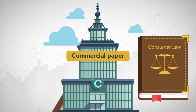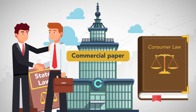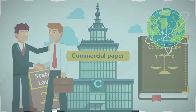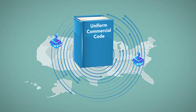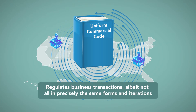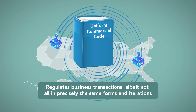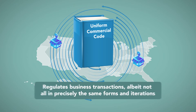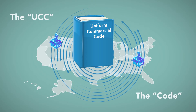Both federal consumer law and state law, along with private industry arrangements and international agreements, govern the modern commercial payment system. All states have adopted a model law called the Uniform Commercial Code to regulate business transactions, albeit not all in precisely the same forms and iterations. We'll refer to this as the UCC, or the Code.